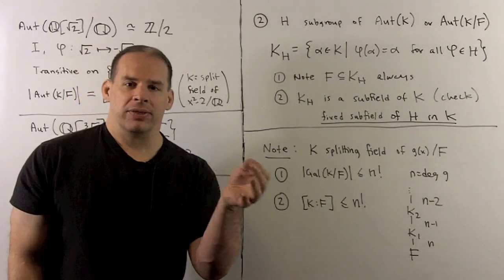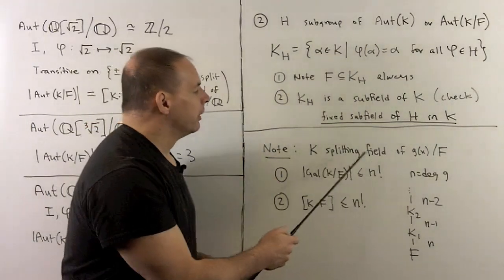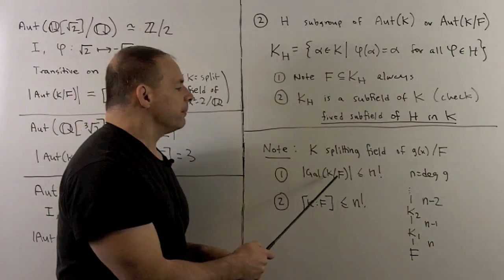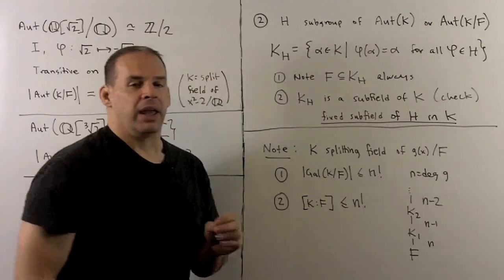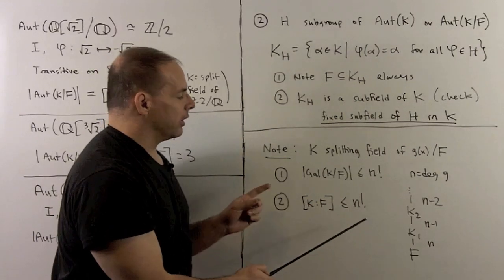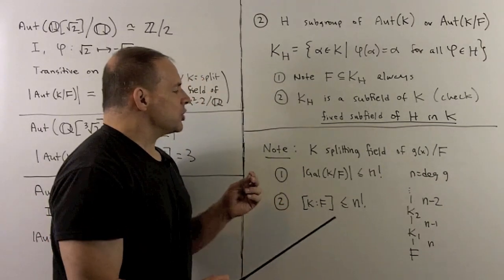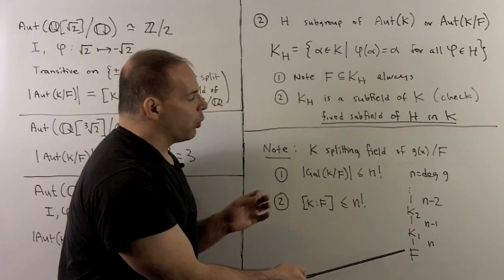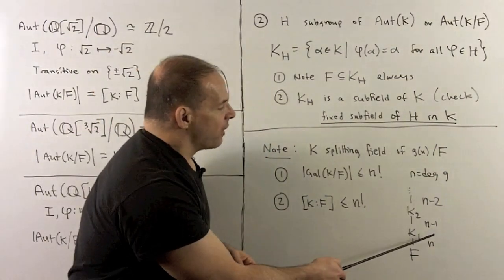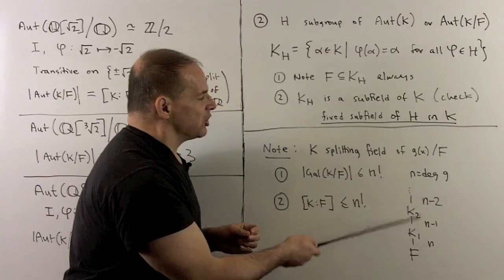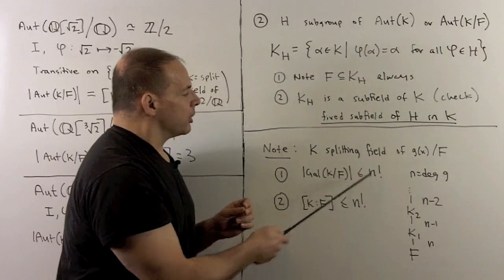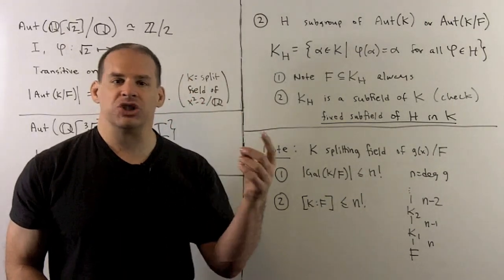Now, one last thing to think about for our inequality when we have a splitting field: the order of the Galois group of K over F is less than or equal to N factorial, where N is the degree of G, and the degree of K over F with K a splitting field for G is also less than or equal to N factorial. Starting with F, we take the roots of G over F in K; adjoining one root gives an extension of degree N. In the worst case, as we adjoin each root, we only split off a single factor, dropping the next extension degree by 1, and multiplying these numbers gives N factorial. These bounds are well-aligned, suggesting a connection between the two, and it turns out this holds in general.